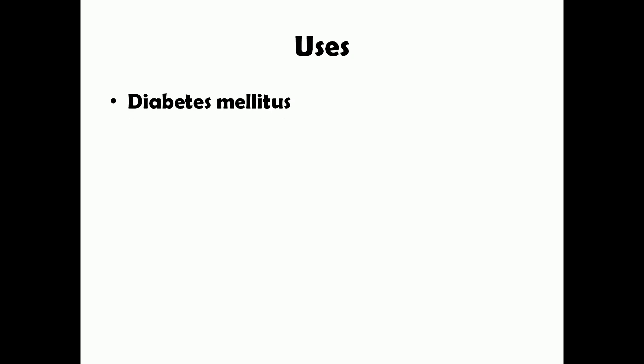SGLT2 inhibitors are the third-line drug of choice for diabetes mellitus. They also have beneficial effects such as weight loss and lowering of glycated hemoglobin levels. However, they are not the most preferred drugs for diabetes because better first-line options such as metformin exist.